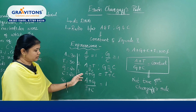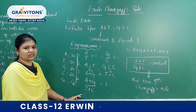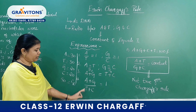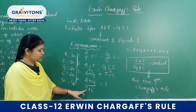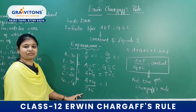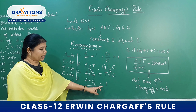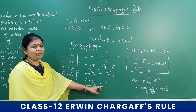The same thing is also represented as: (A plus G) divided by (T plus C). So if we take the purine-to-pyrimidine ratio, it will again be equal to 1.